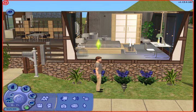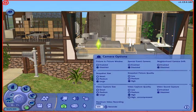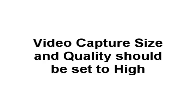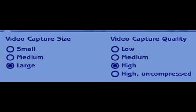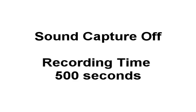The last of your options are your camera options. These are found in the control panel and the icon looks like a little camera — it's pretty easy to find. You want your picture-in-picture, event camera, and neighborhood camera drift all disabled. These are really kind of useless when it comes to movie making unless you want that cinematic feel. Video capture size and quality should be set as high as your computer can handle. Don't bother filming high and compressed because the files are just way too large and it's not worth it. Also, turn the sound capture off — it causes a lot of problems when the clip is rendering.